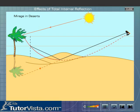Due to this, the observer will see an inverted image of the object. The observer thinks that there is a pool of water from the formation of image.